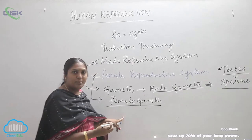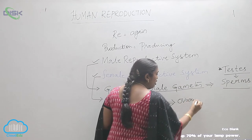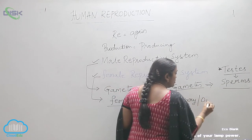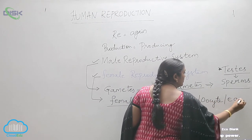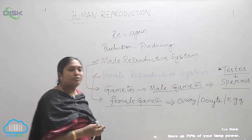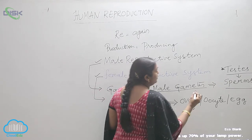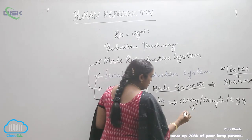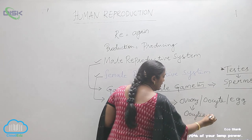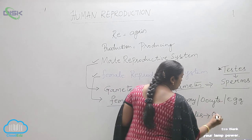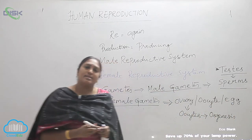What about the female gametes? Here the gametes are the ovary — another name is oocyte, or the egg. These are the female gametes, and the product formed is the oocytes, formed by the process of oogenesis, which we will be discussing in detail.